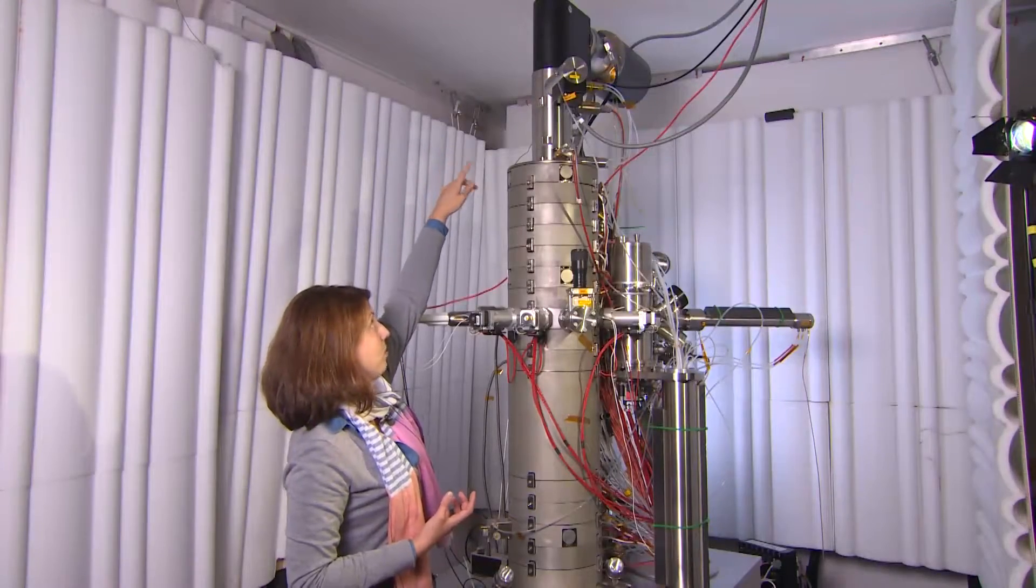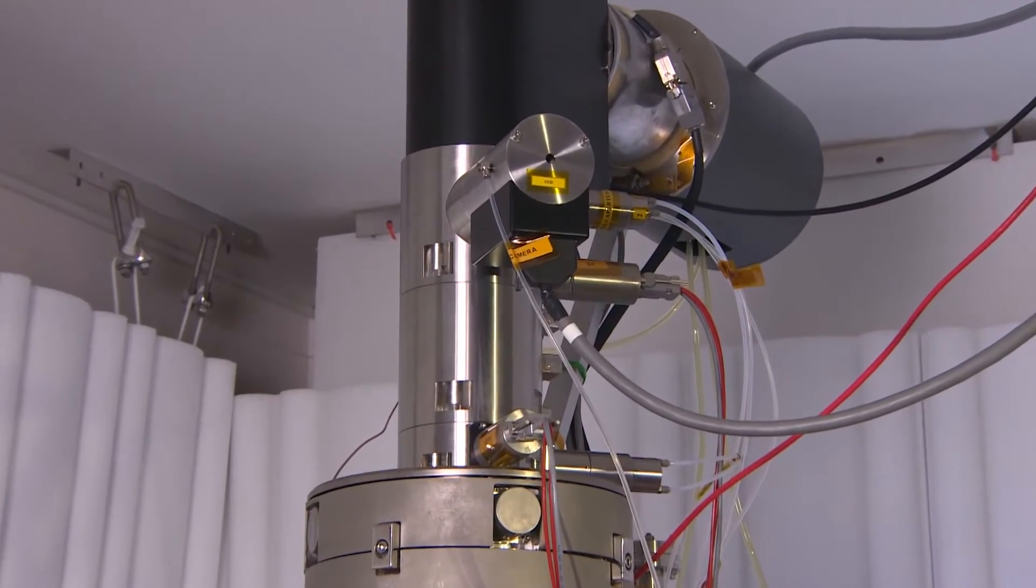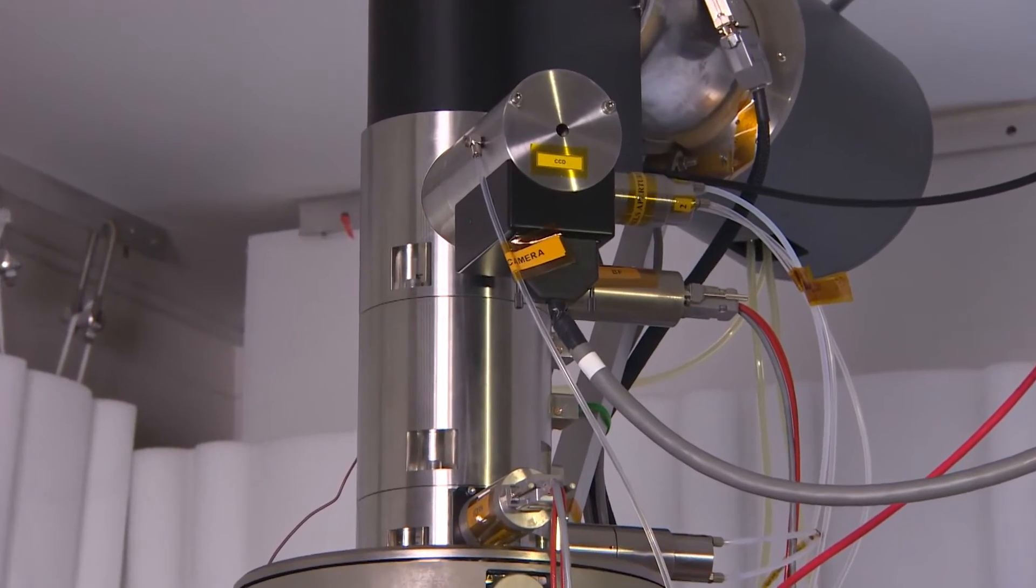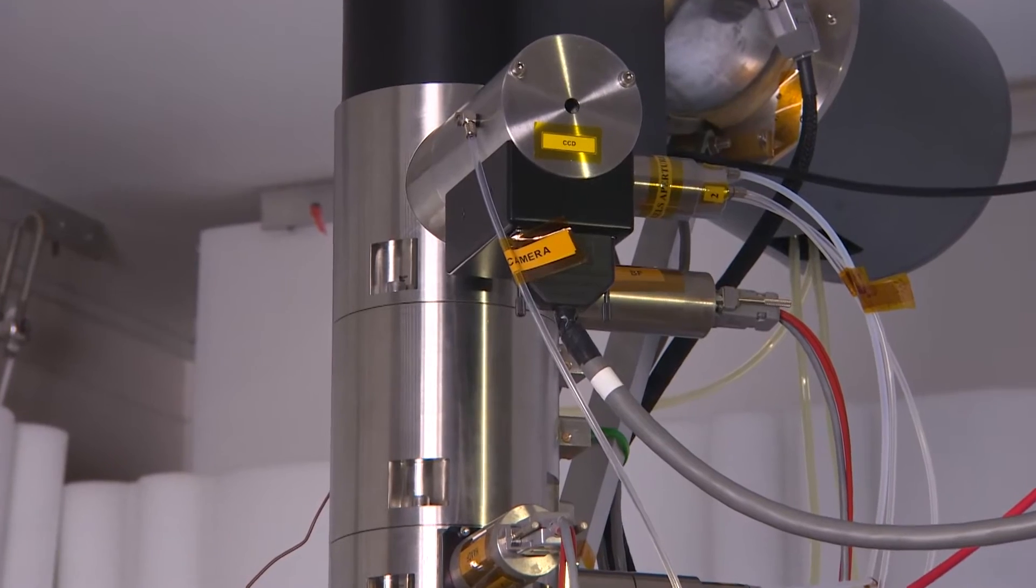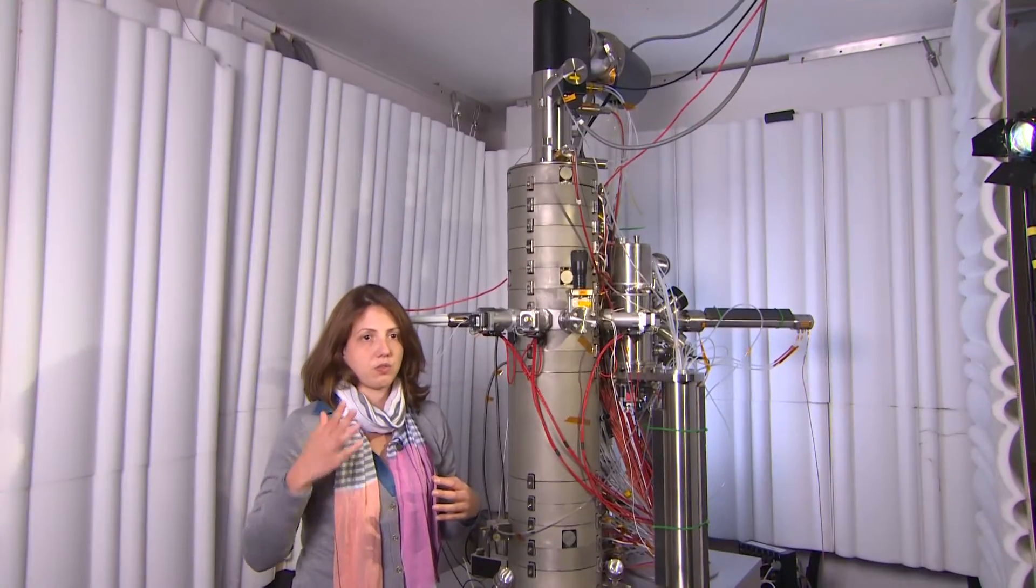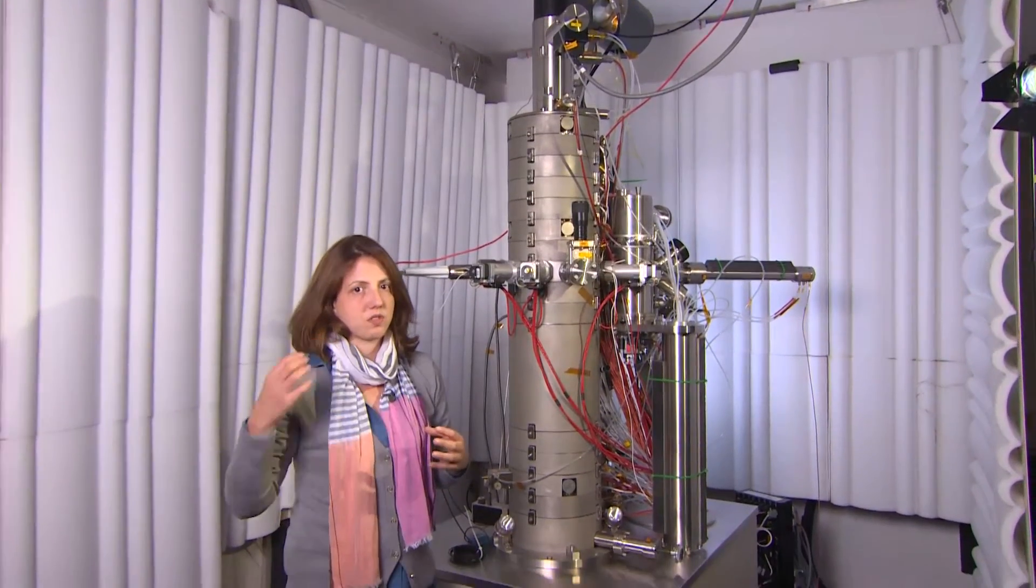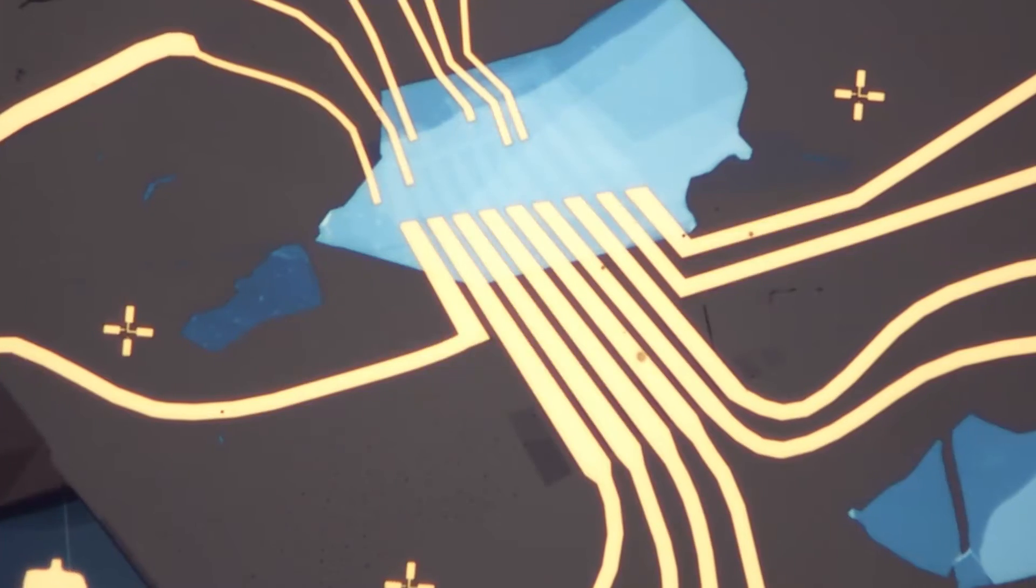On the top of the microscope you have what is called an electron energy loss spectrometer which collects electrons that have lost energy going through the sample, and this gives us information about the electronic structures of the materials we are looking at.